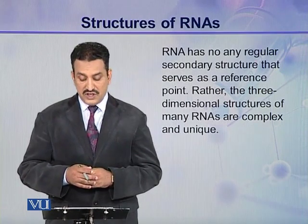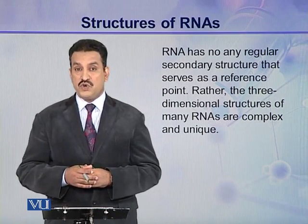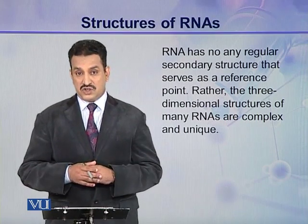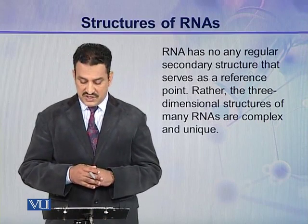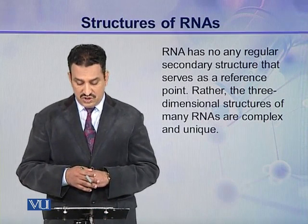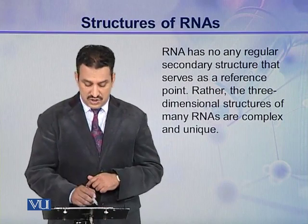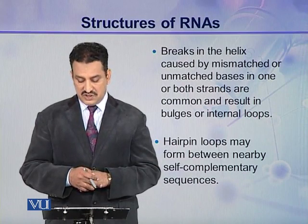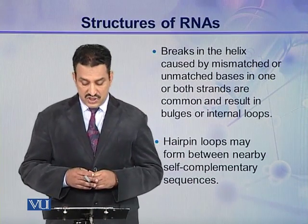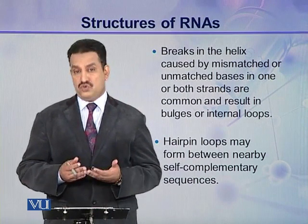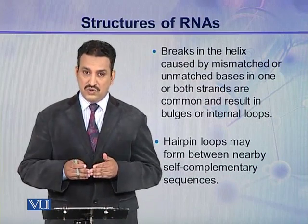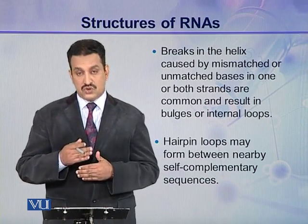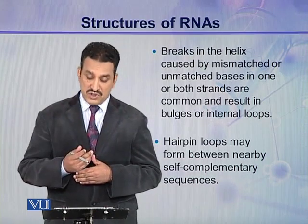RNA has no regular secondary structure that serves as a reference point. In the case of DNA, the double helical structure is the reference structure, but there is no such reference structure in ribonucleic acids. Rather, the three dimensional structures of many RNAs are complex and unique. Breaks in the helix caused by mismatched or unmatched bases in one or both strands are common, and these breaks result in bulges or internal loops.